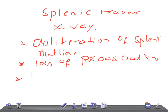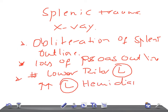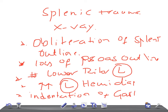Next, if there is a fracture of the lower ribs on the left side, that's another important sign. Then, elevation of the left hemidiaphragm — raised left hemidiaphragm. And finally, indentation of the gastric air bubble.